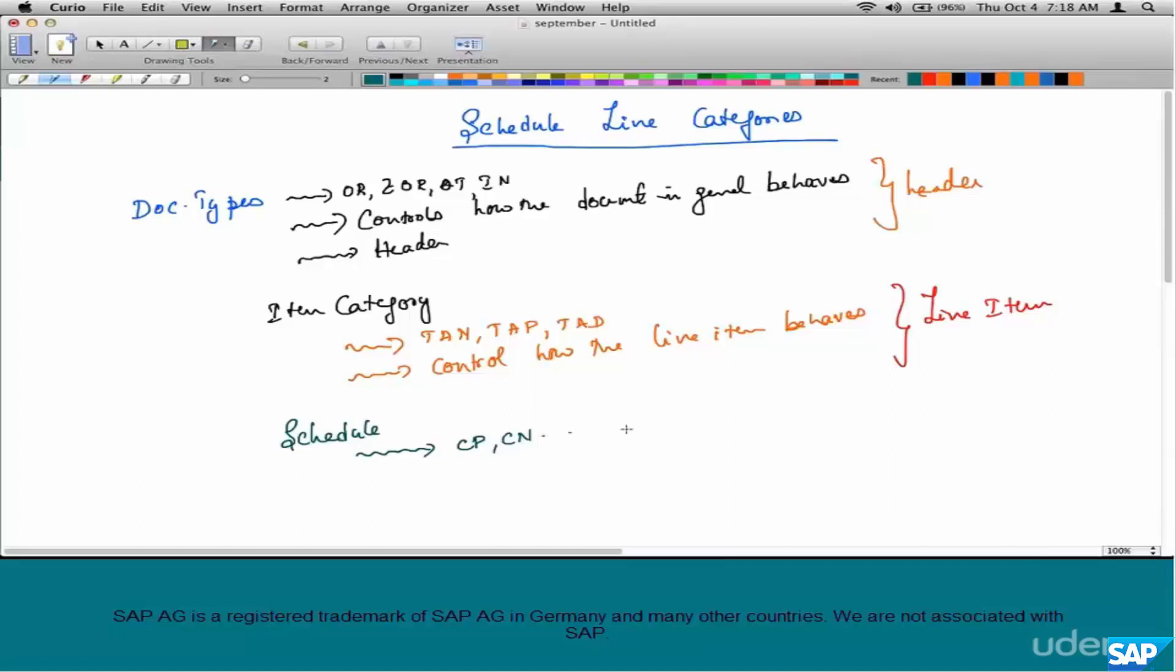Now CP, CN, these are some examples of schedule lines. We are going to talk about them going forward but they control how the schedule line behaves.